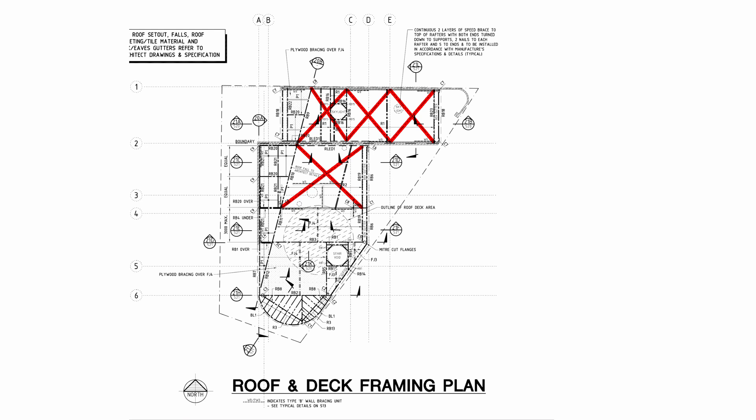We can also see that we're notating roof bracing throughout the building, pulling the load back to where the horizontal loads can be supported. We do this through a number of ways, but typically it's a cross bracing location. On this plan we can also see our ledgers being called up.